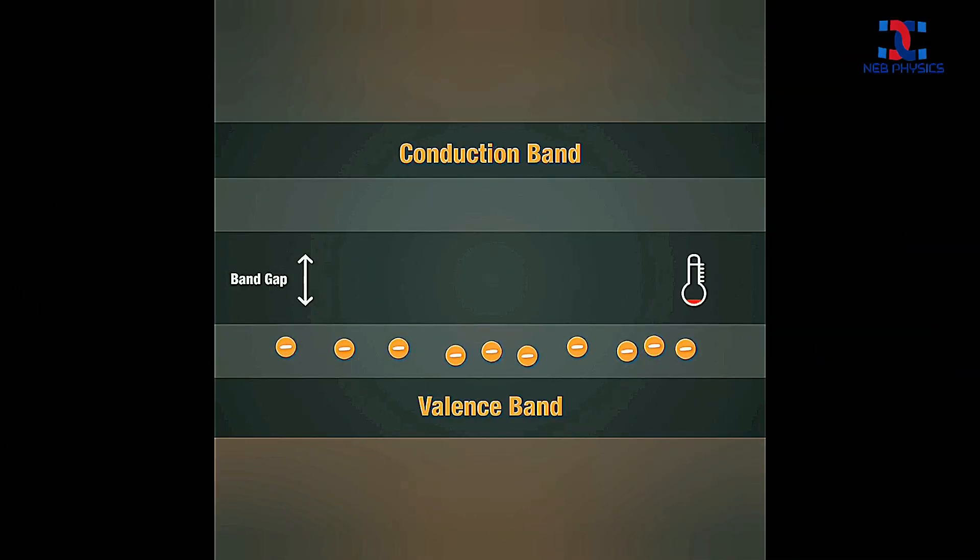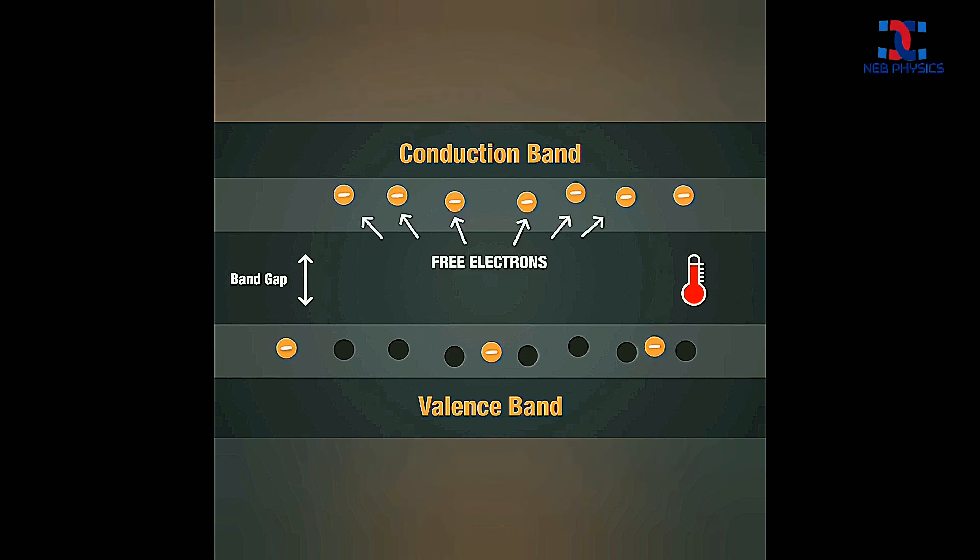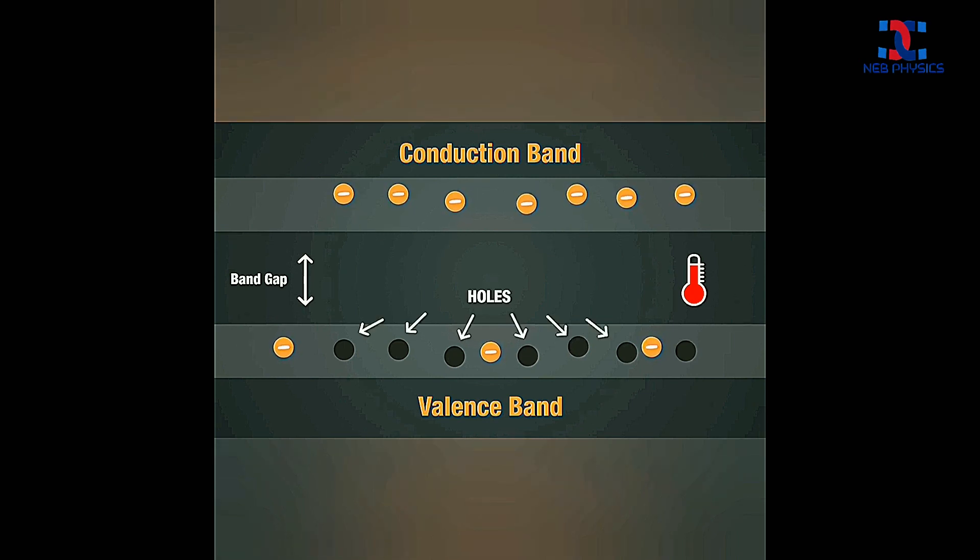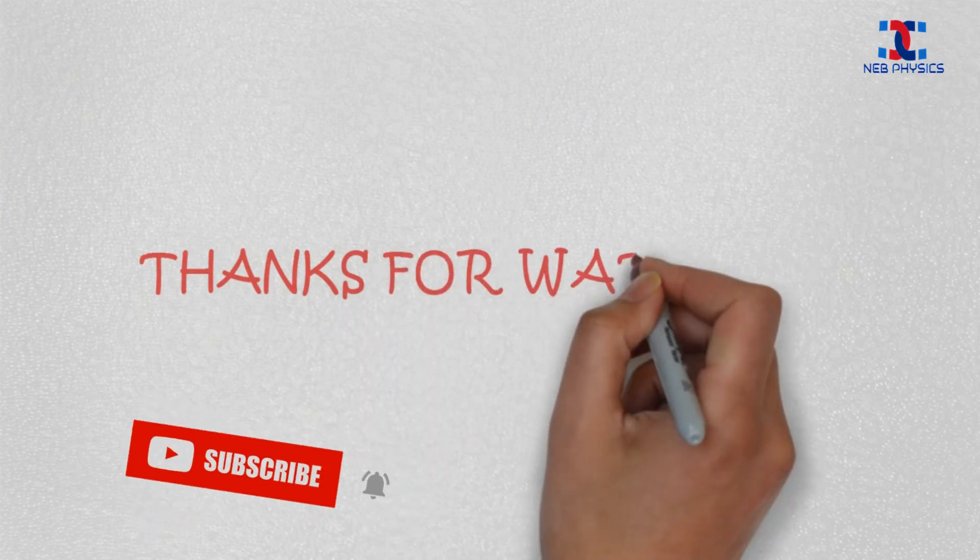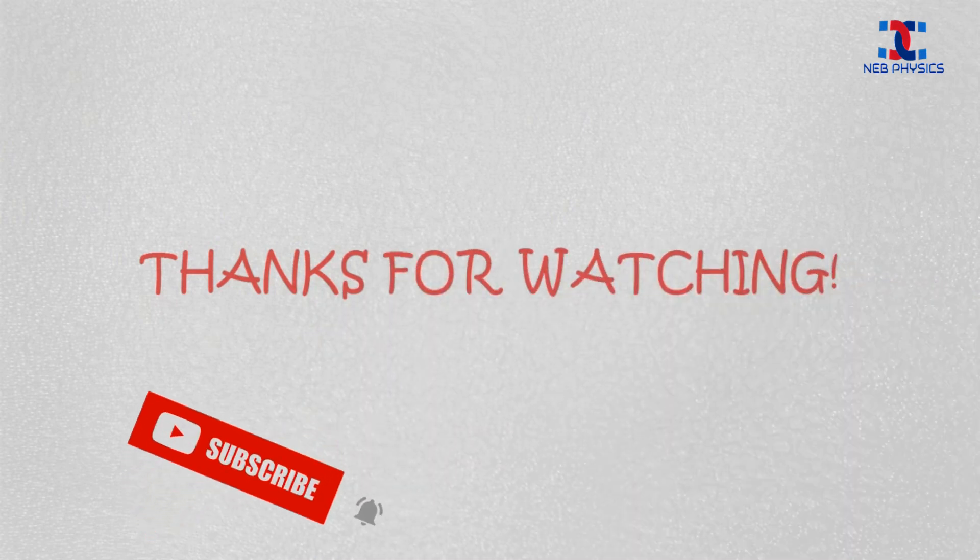A semiconductor has two bands, valence band and conduction band. When sufficient thermal energy is provided, some electrons from valence band jumps to the conduction band, which are called free electrons. And the vacancies that they create in valence band while jumping to the conduction band are called holes. And it's very interesting that the number of holes in valence band is exactly equal to the number of free electrons in the conduction band.